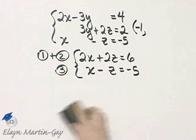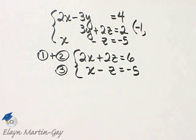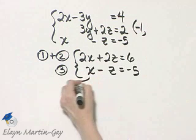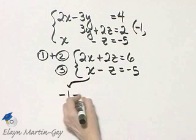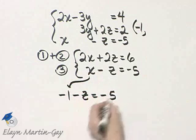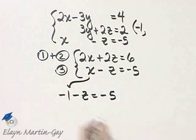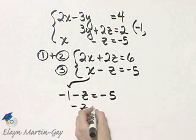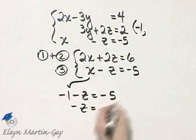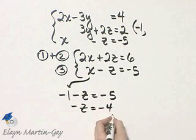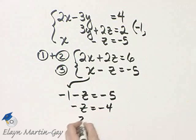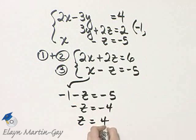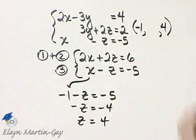I'll go ahead and pick equation three. Since x is negative one, minus z is equal to negative five. I can solve this equation for z. So I'll have negative z is negative five plus one or negative four. And if I solve for z, z is four. So I know z is four.